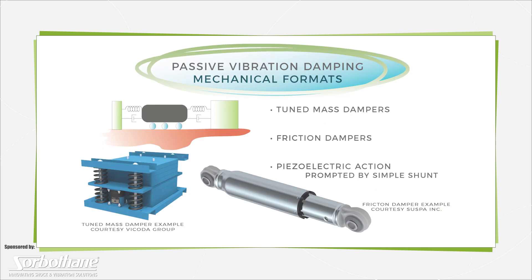On passive vibration damping, those in mechanical formats include tuned mass dampers that affix to machinery or structures to damp narrow frequency bands of vibration. Other options for passive mechanical damping are friction and piezoelectric action prompted by simple resistive shunt.